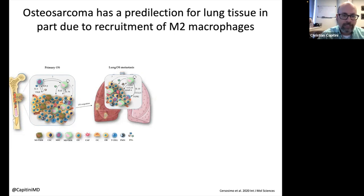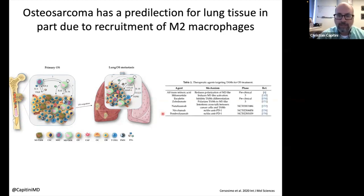But when you biopsy the metastasis of an osteosarcoma in the lung, there's a high number of macrophages, and a particular subtype — the M2 — is dangerous because it makes all kinds of anti-inflammatory mediators so that when immune cells go in, they get turned off. There have been a variety of therapeutic agents developed to target these tumor-associated macrophages for osteosarcoma treatment, some in the preclinical space, some in phase three studies, and some in early phase trials.